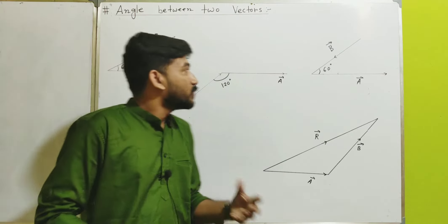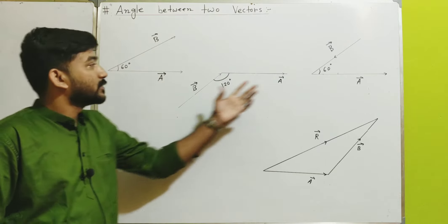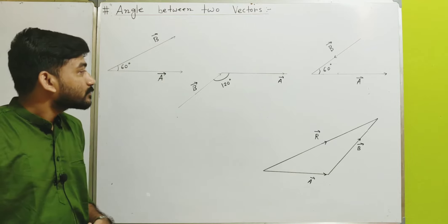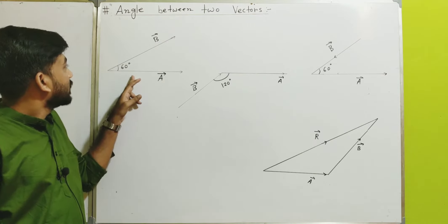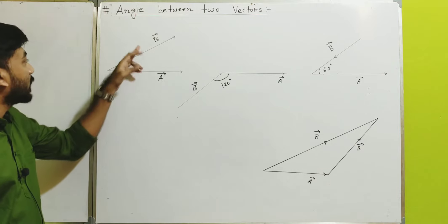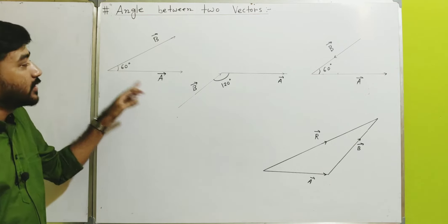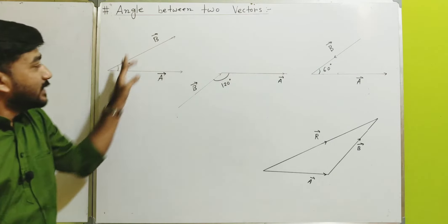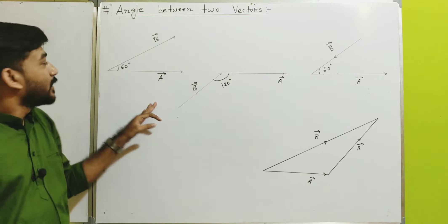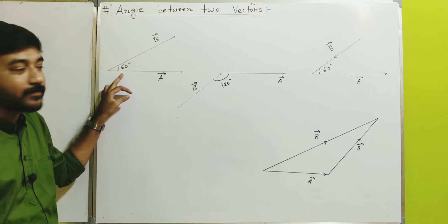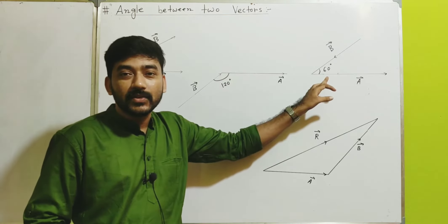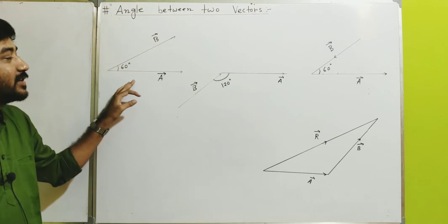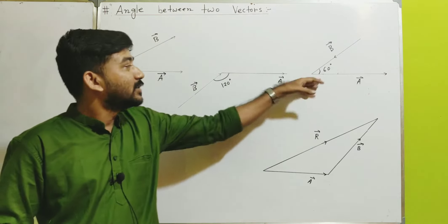Let me analyze the three figures shown in this diagram. Here the angle between two vectors is 60 degrees, here it is 120 degrees, and here it is 60 degrees. We can see this apparently. But it does not mean that the angle between these two vectors is 60 degrees, these two vectors is 120 degrees, and these two vectors is 60 degrees.